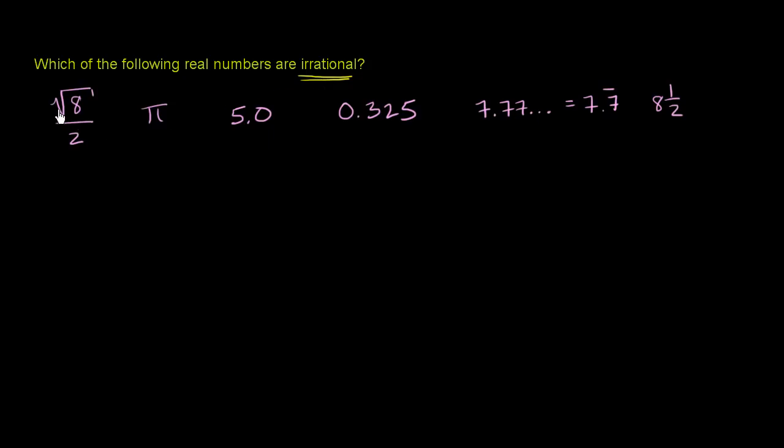So let's see what we have here. So we have the square root of 8 over 2. So the square root of 8, if you take the square root of a number that is not a perfect square, it is going to be irrational.